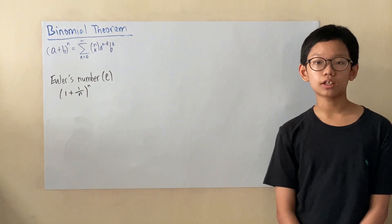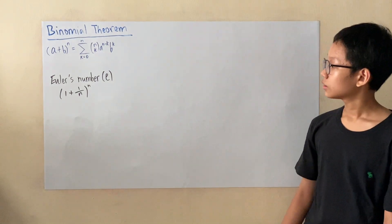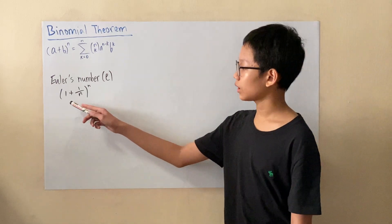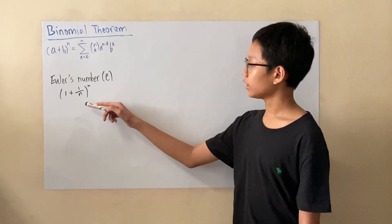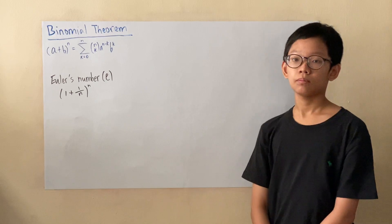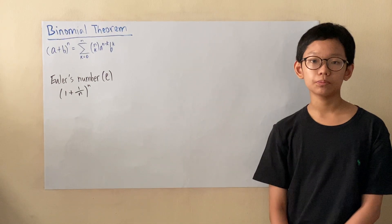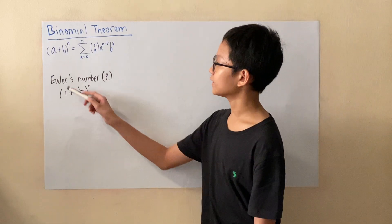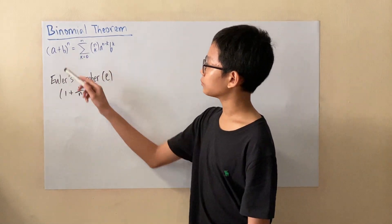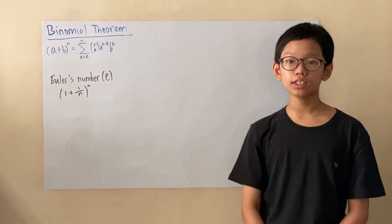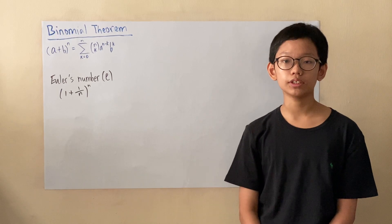So now let's look at the formula to calculate Euler's number. The formula is (1 + 1/n)^n. And if you have noticed, this can be calculated using the binomial theorem because in this case, 1 is a, and 1/n is b. So now let's start using the binomial theorem to calculate Euler's number.